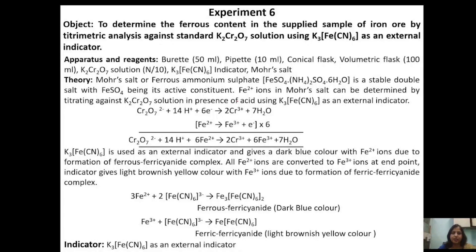Let's understand the chemistry behind this experiment. We use Mohr salt, which is an iron ore. Its chemical name is ferrous ammonium sulphate: FeSO₄·(NH₄)₂SO₄·6H₂O. Ores are minerals from which a metal can be extracted profitably or easily. We determine the ferrous content in Mohr salt using potassium dichromate as standard solution and potassium ferricyanide as an external indicator.